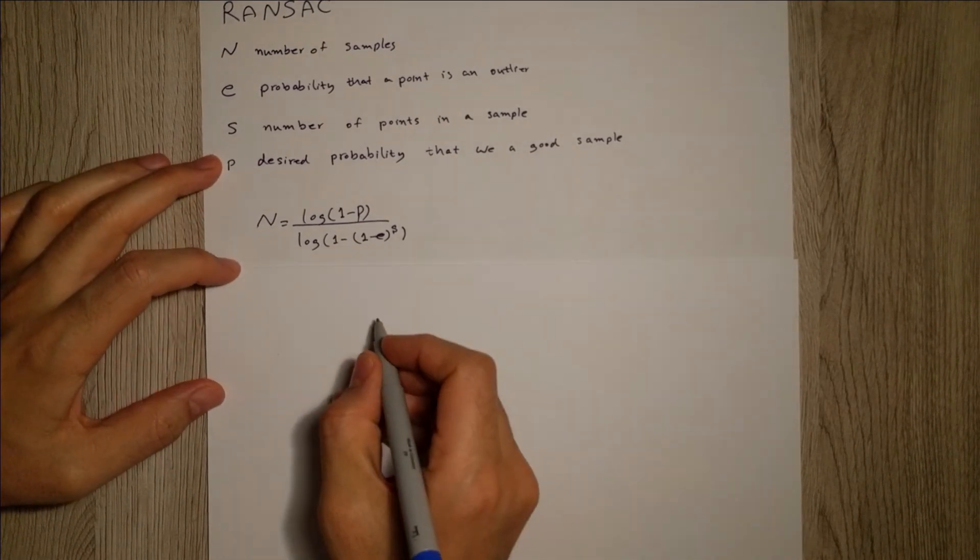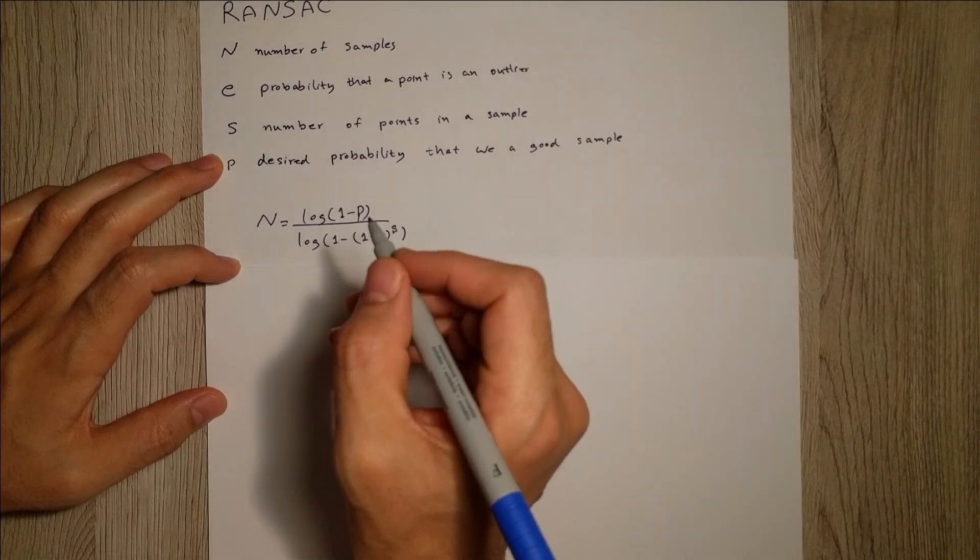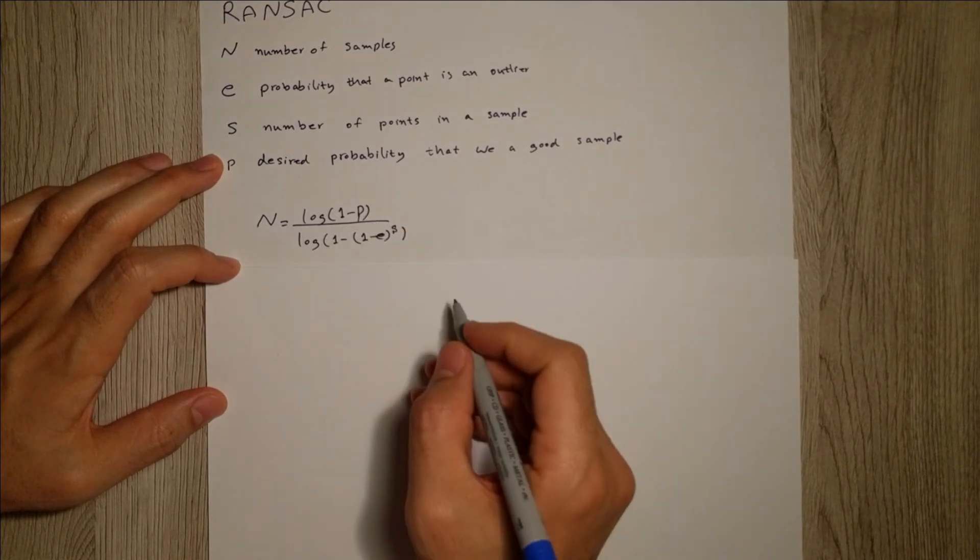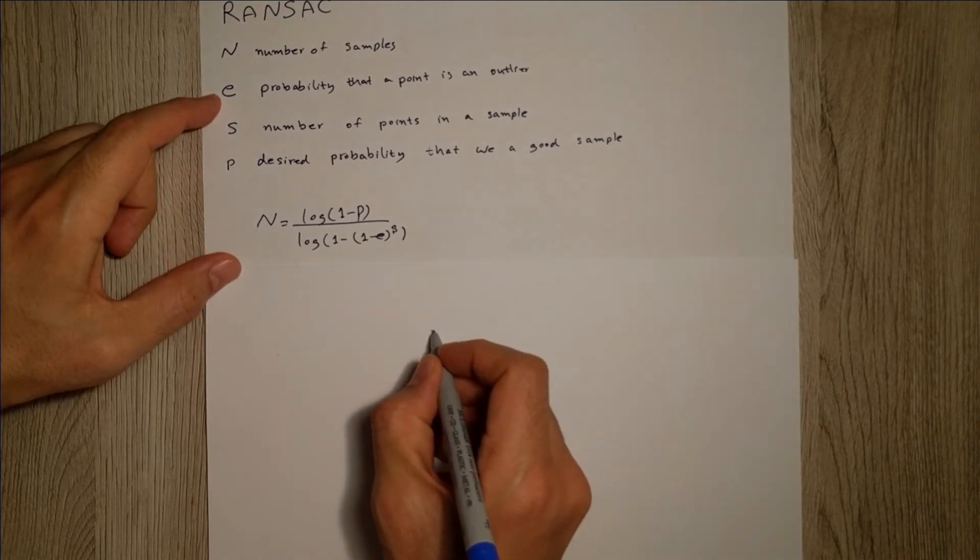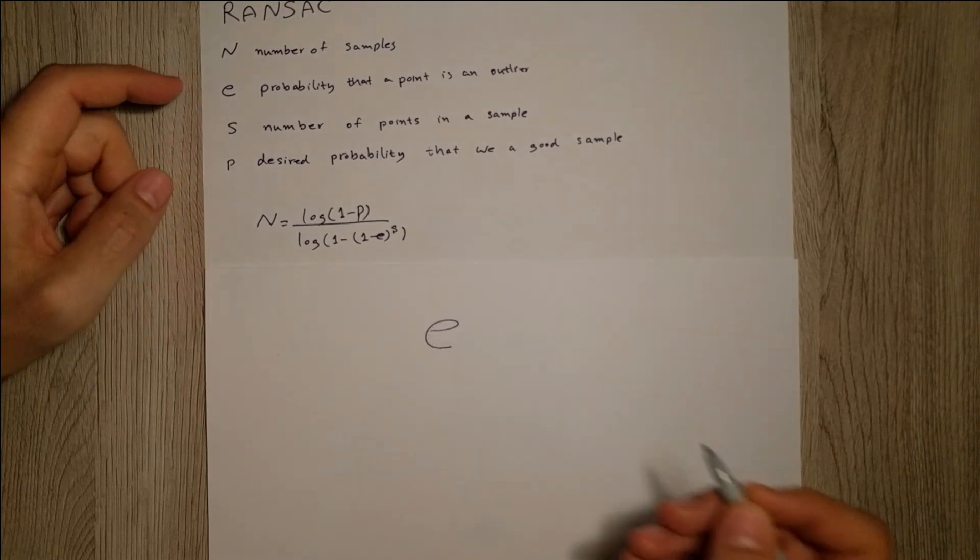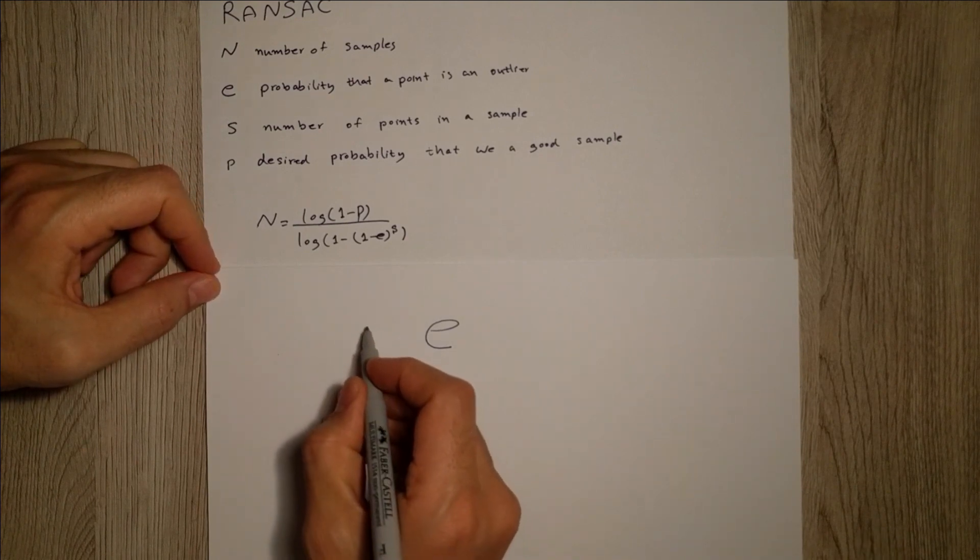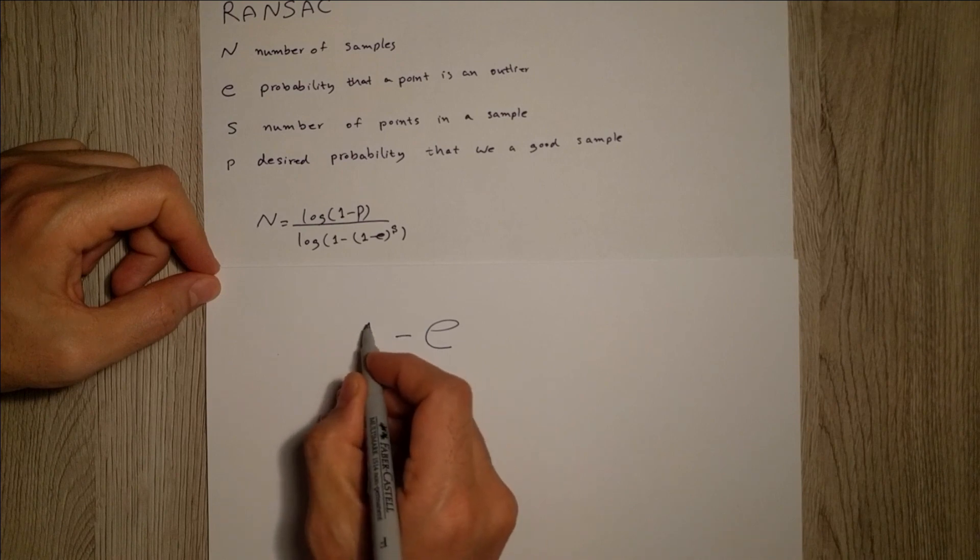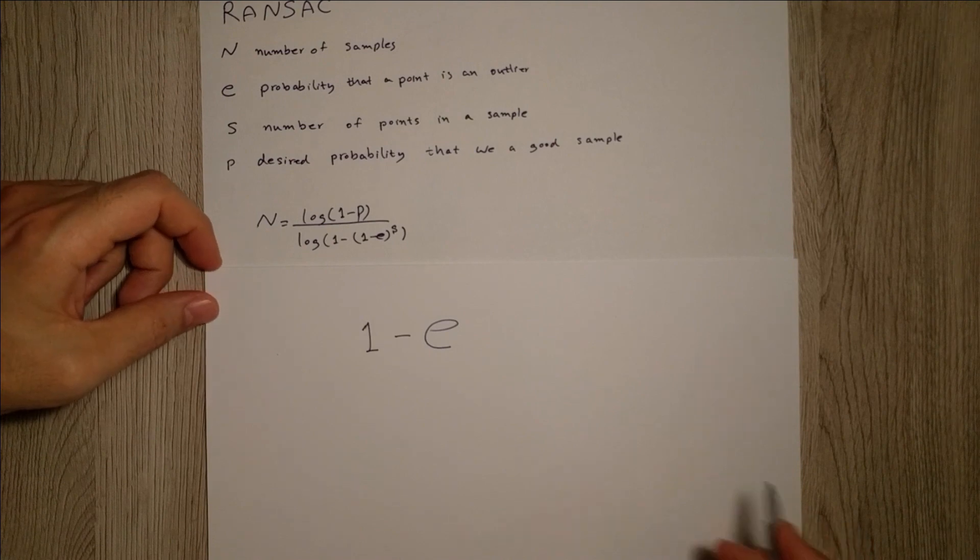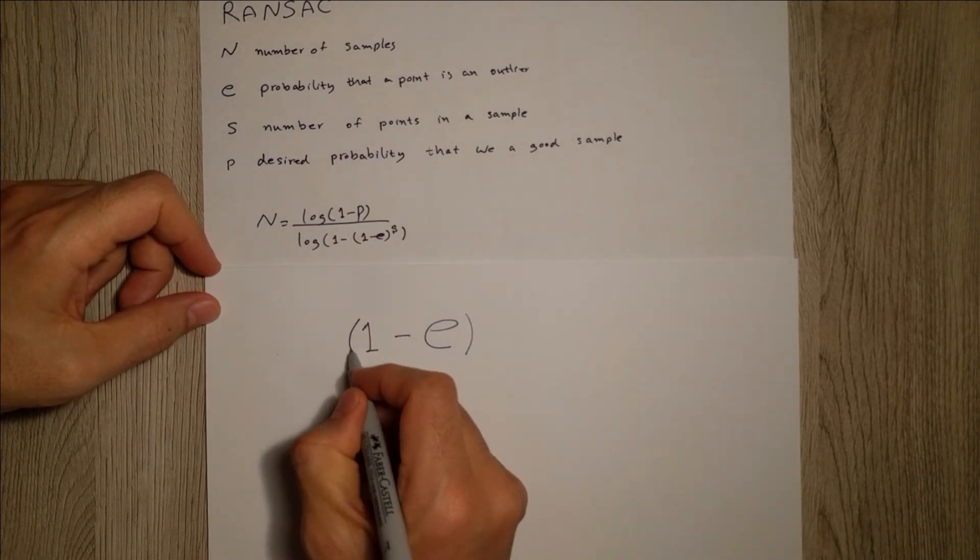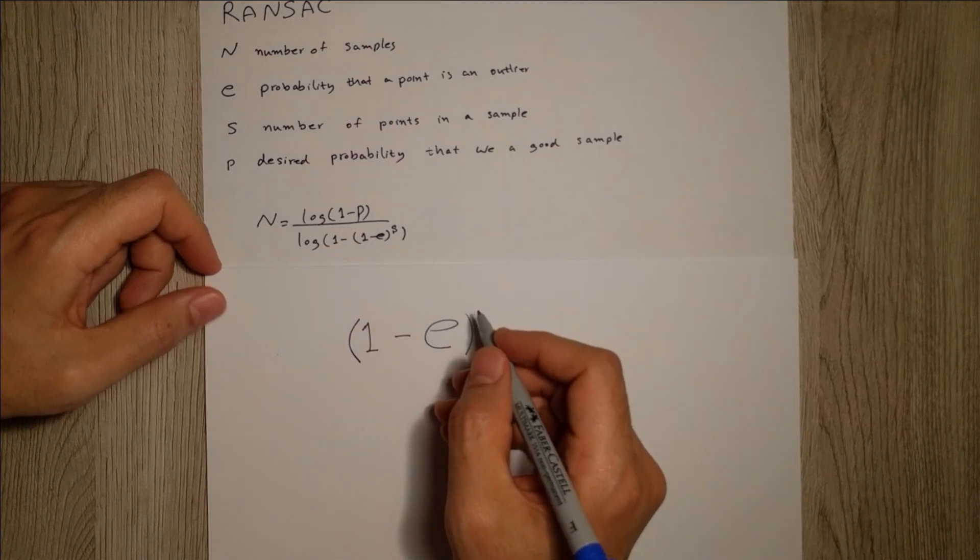Okay, E is the probability that a point is an outlier. So one minus E is the probability that a point is an inlier, as a complement probability. Since we have to choose S points to build up our model...